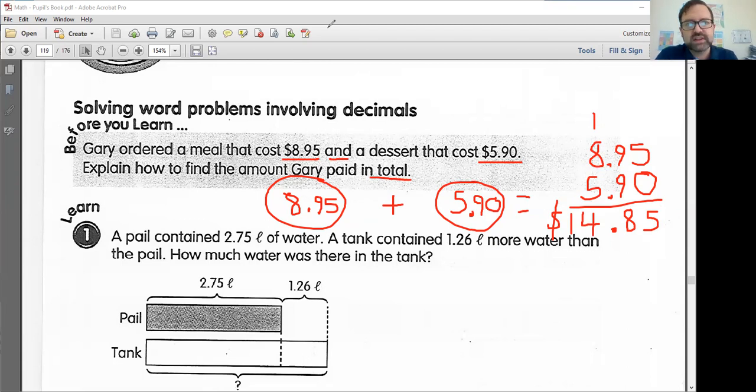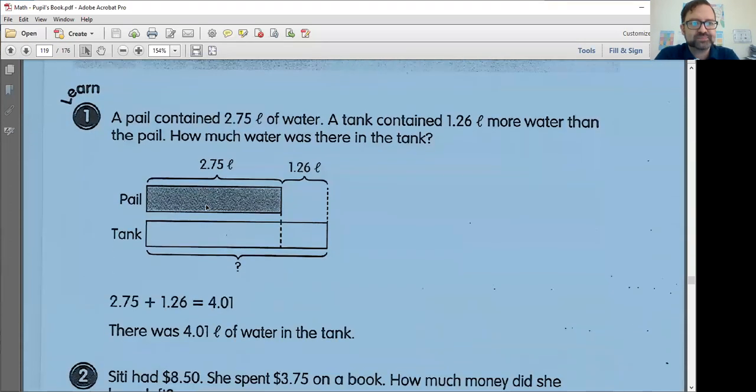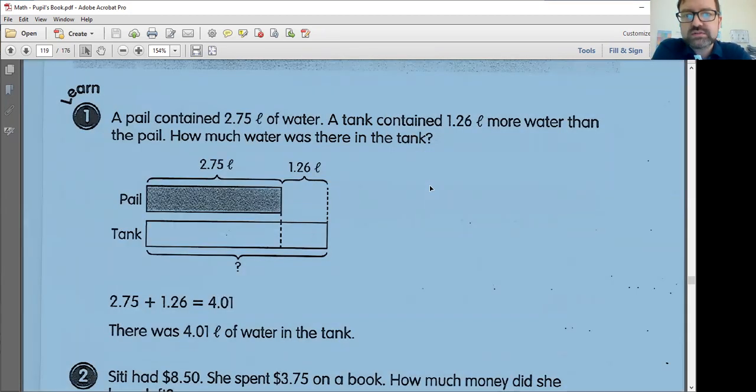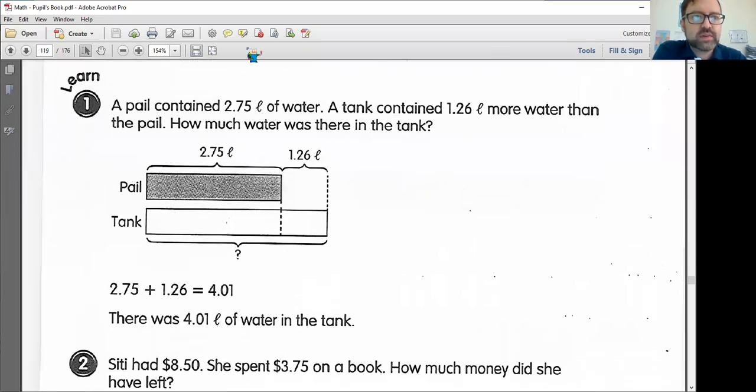So that's just an example of a simple word problem. Let's go through and check these examples, and then we'll do a couple problems ourselves here. A pail, that's like a bucket. A pail contained 2.75 liters of water. A tank, and this does not mean like an army tank. This just means like a giant thing of water here. A tank contained 1.26 liters more water than the pail. How much water was there in the tank? Step number one, just go through, underline this. 2.75 liters, and we have 1.26 liters more. This more is important. And then our question here is asking, how much water was there in the tank? How do we figure this out?